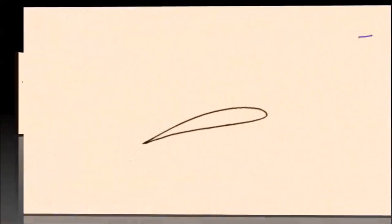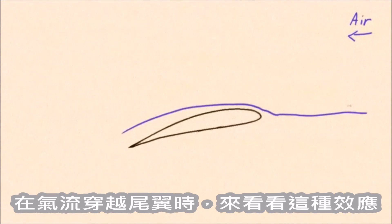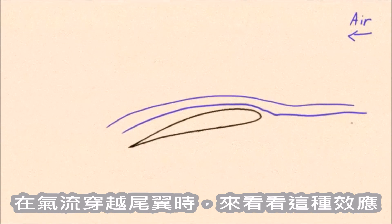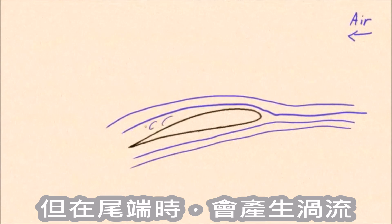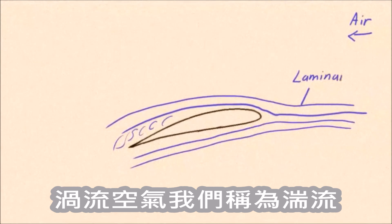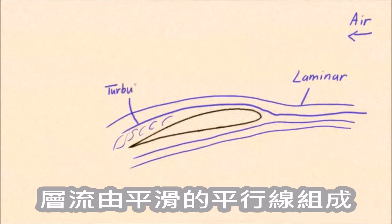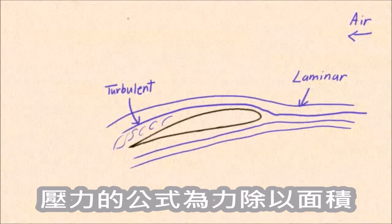Lift and drag are forces created as air flows around different shapes. Let's look at a cross-section of an airfoil or wing to clearly show these effects. Air flows around the wing smoothly except at the tail end, where there is some swirling air. The smooth, steady air is called laminar flow, while the swirling air is called turbulent flow. Laminar flow consists of smooth parallel lines, while turbulent flow has chaotic swirls.